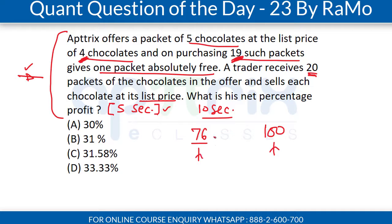Now you can clearly see that he is going to get a profit of 24 over 76. That is what will decide your problem solving — how quickly you can get this. You should get it mentally without raising the pen. Once you read the question, you can easily see this is going to be 76. A few extra seconds will give you that number, 100 is there, so 24 will not take any time.